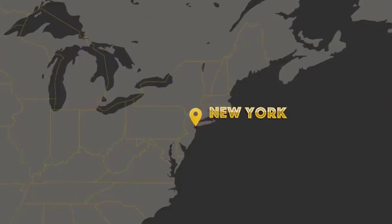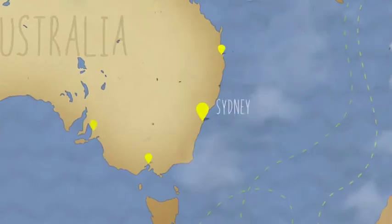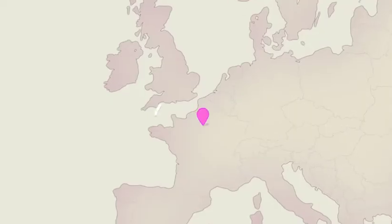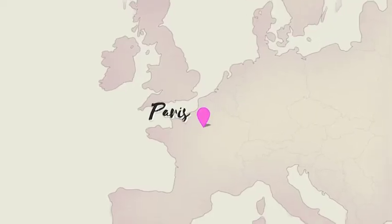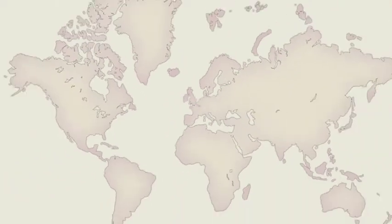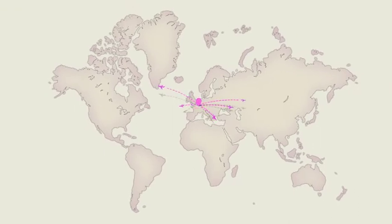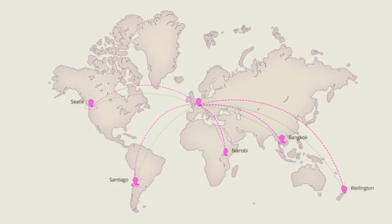New York, Sydney, or Paris. With six detailed continents and a map of the world, you can show where you are headed and keep your viewers informed every step of the way.